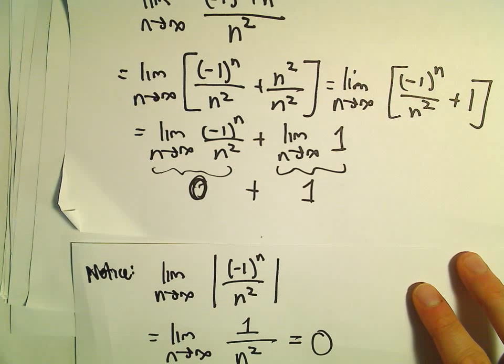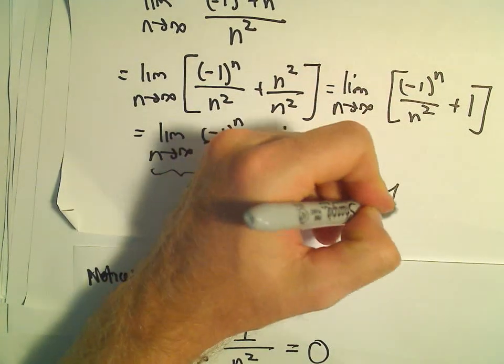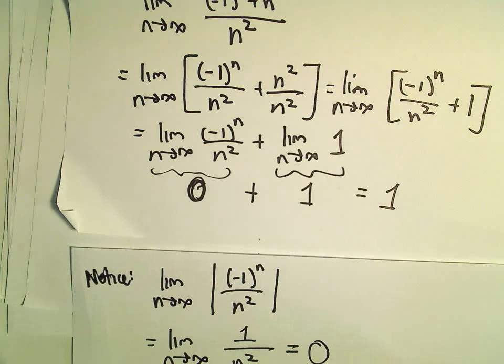So we're left with 0 plus 1. In this case, our limit will simply converge to 1.